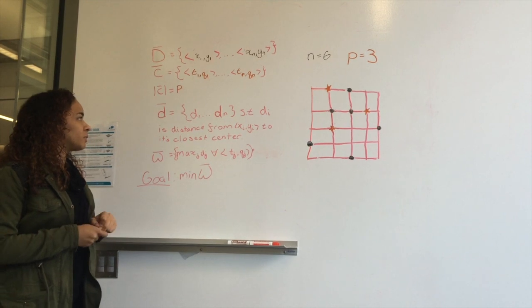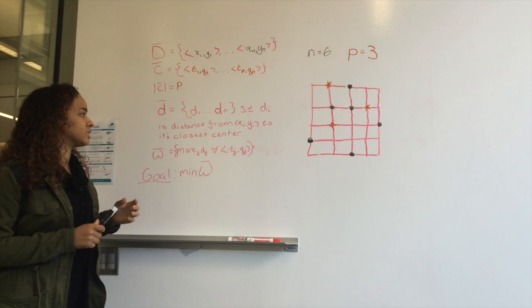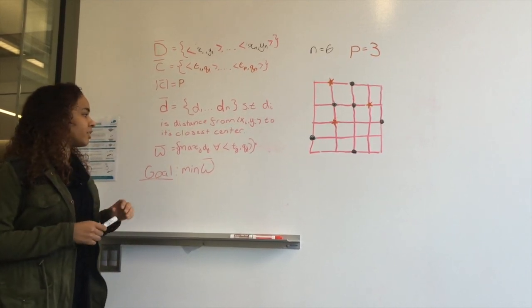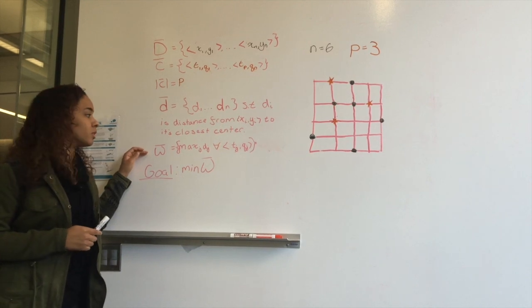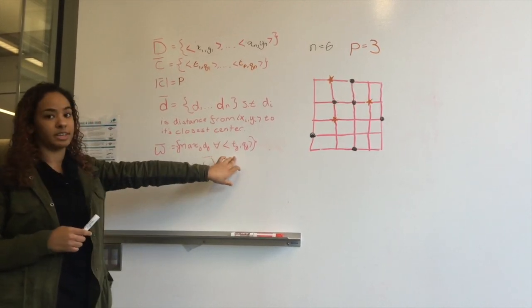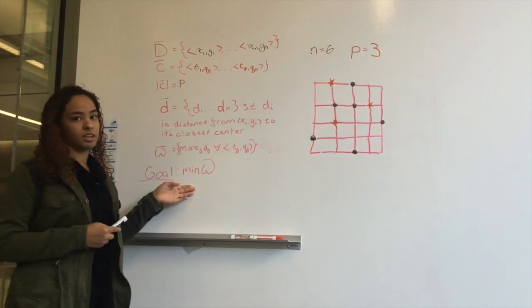Our next set will be our set little d. Little d is going to contain the distances from each point to its closest center. And then from that, we're going to make set W. Set W is going to contain the max distance for each of the center points. Our goal in this problem is to minimize our set W.